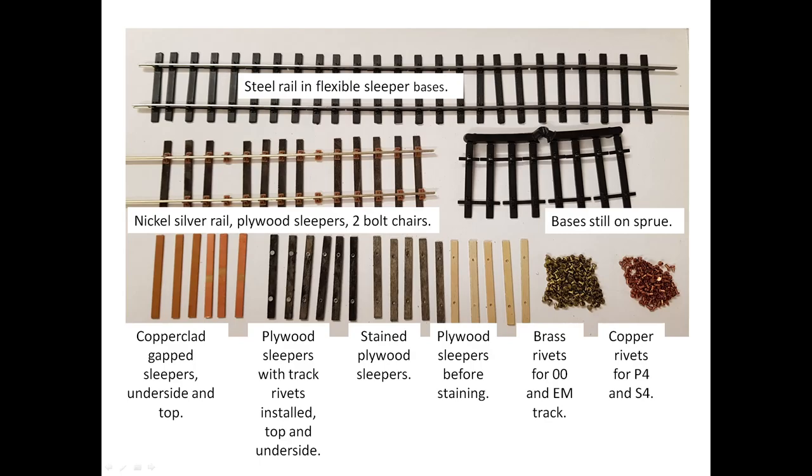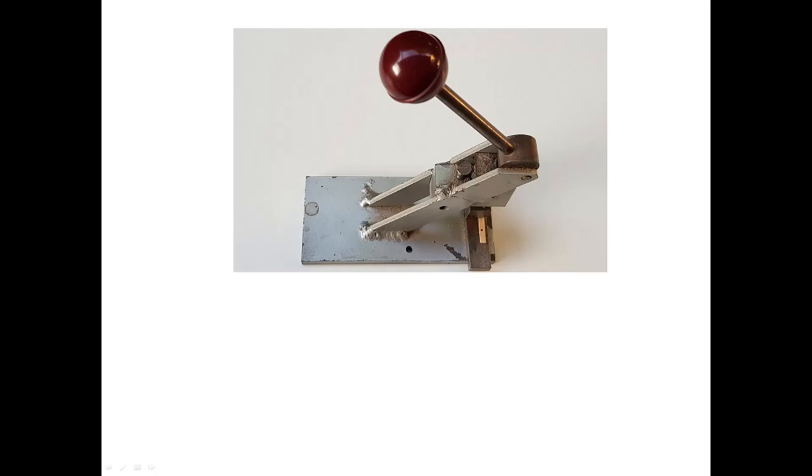On curved track outside the scenic area, I have used rivet and ply. The brass track rivets are designed for 00 and EM gauge track. These can be used for P4 track unless you plan to add cosmetic chairs. The copper rivets are for P4 and S4. These have smaller heads.